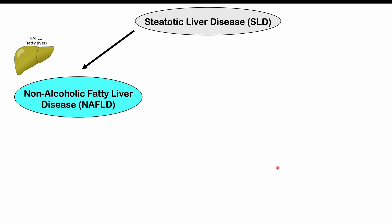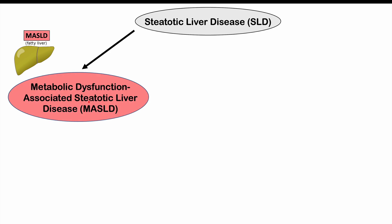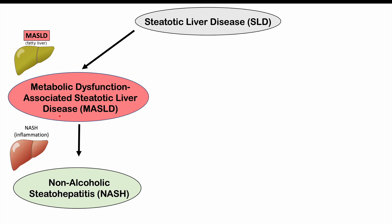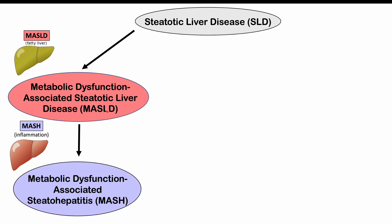Looking at the umbrella term of steatotic liver disease — meaning hepatic steatosis has been demonstrated — what used to be called non-alcoholic fatty liver disease, or NAFLD, is now called metabolic dysfunction-associated steatotic liver disease, or MASLD. And where NAFLD with inflammation was called non-alcoholic steatohepatitis (NASH), the new term when MASLD leads to inflammation is metabolic dysfunction-associated steatohepatitis, or MASH.